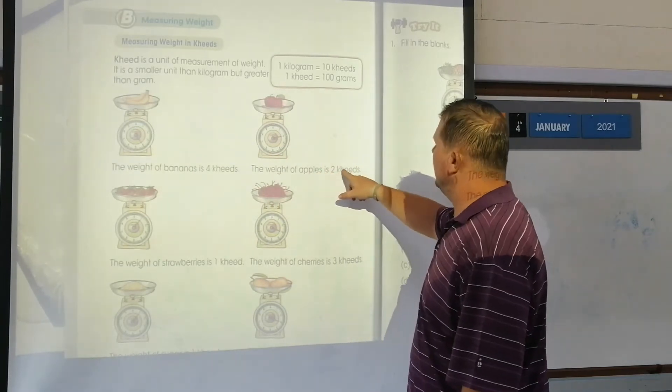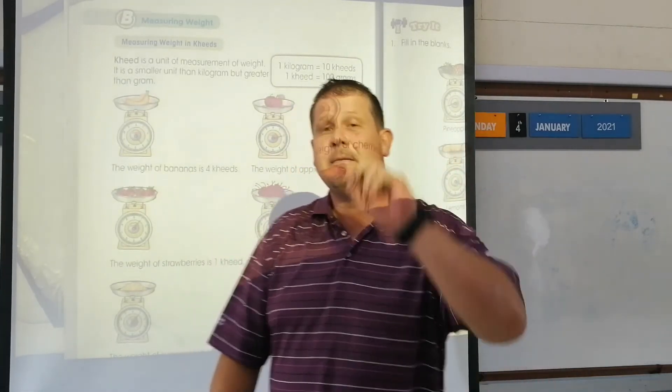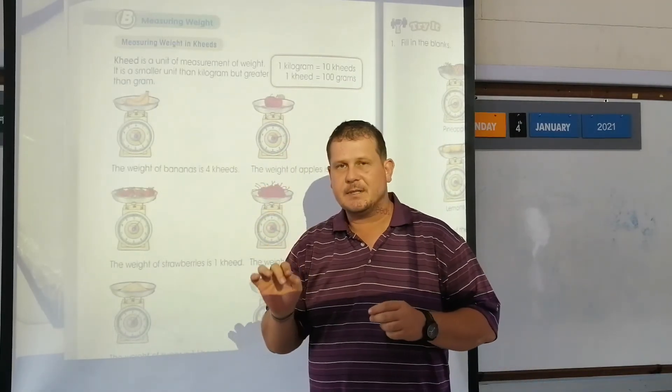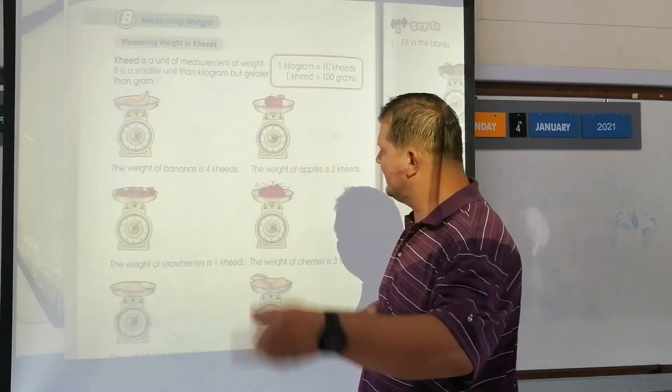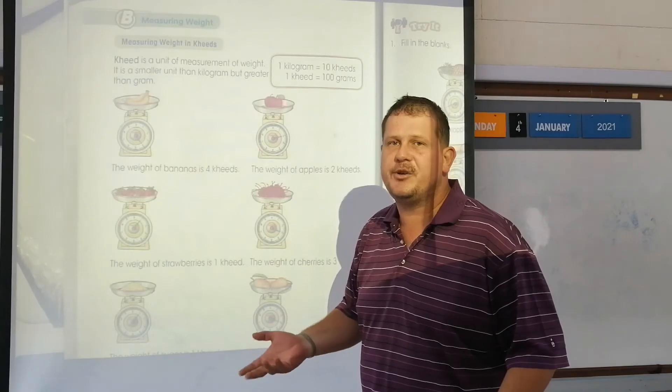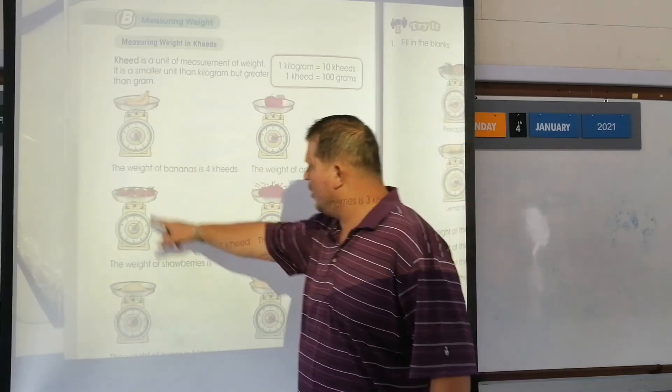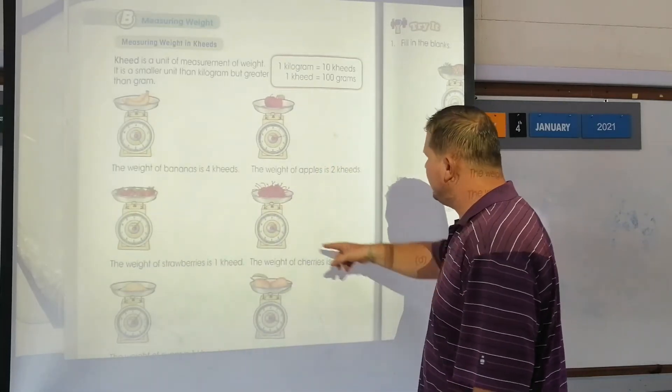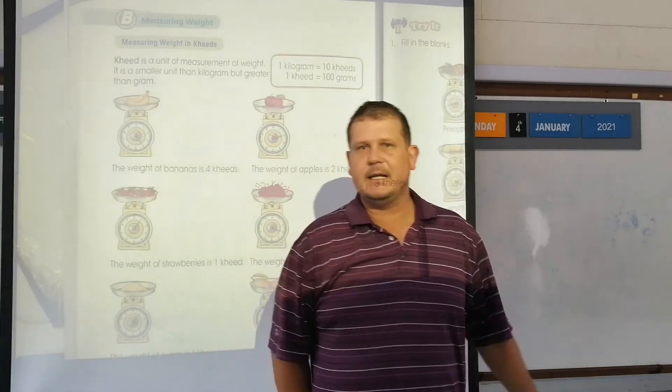The weight of apples is two keys. It's just about reading the scale, guys, and making sure, because the scale will tell you whether it's kilograms, whether it's grams, or whether it's keys. The scale will tell you, so you just have to make sure you read. The weight of strawberries, all of these strawberries is one key. The weight of cherries, all of these cherries, three keys. Let's look at the next page.